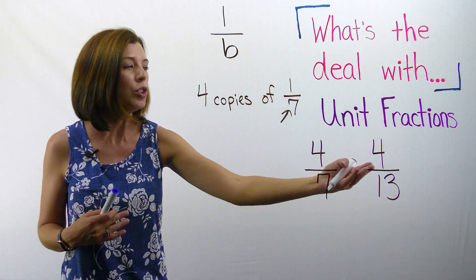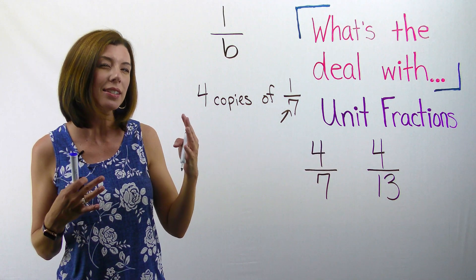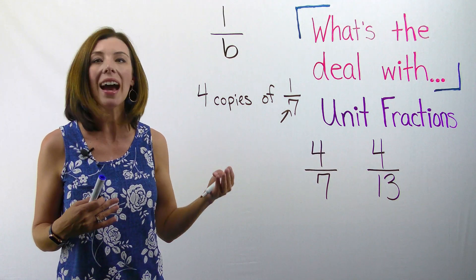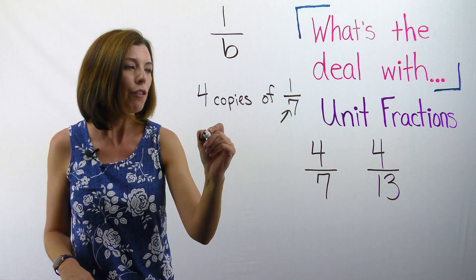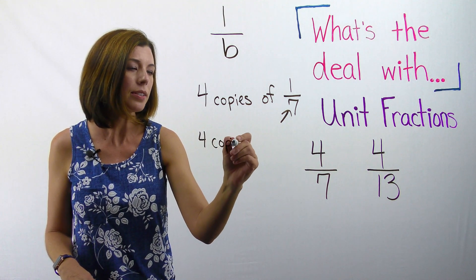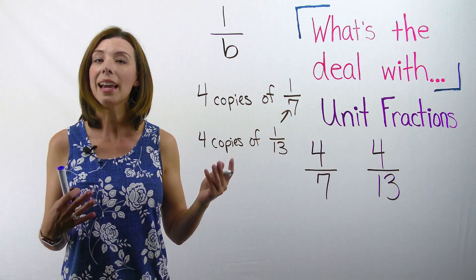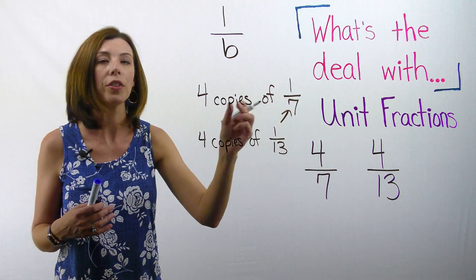I know that my numerator tells me the number of slices or copies of that unit fraction. So four thirteenths is really four copies of one thirteenth. The unit fraction being one thirteenth.